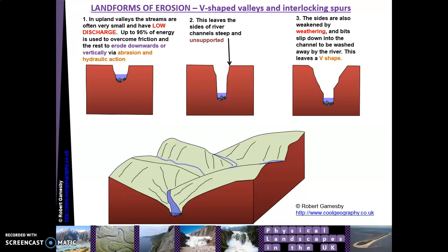As the V-shaped valleys form, you also get interlocking spurs. These are a bit difficult to understand from a diagram, but when we go out to the Peak District you'll see them much more clearly — you get hummocky hills interlocking with each other. As the river valley cuts further into the landscape, these valleys interlock. A good way to imagine it is to interlock your fingers and look up — your fingers interlock in the same way these valleys do. That's what we call interlocking spurs.